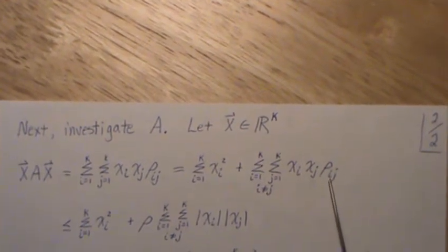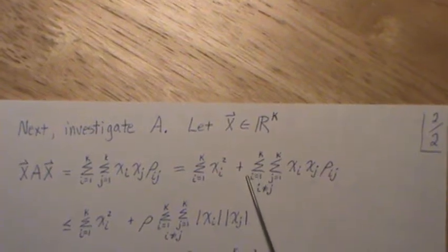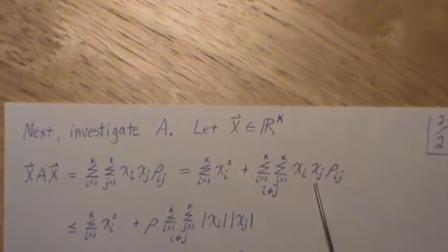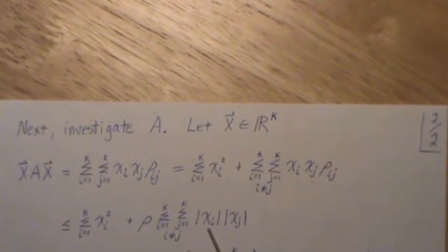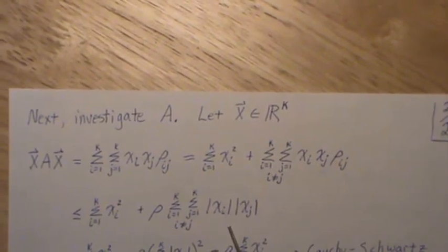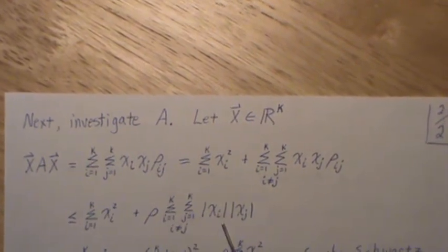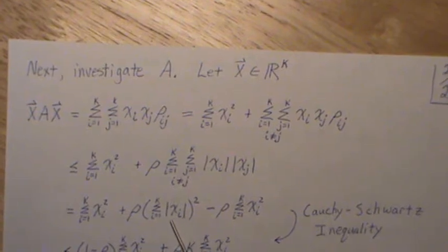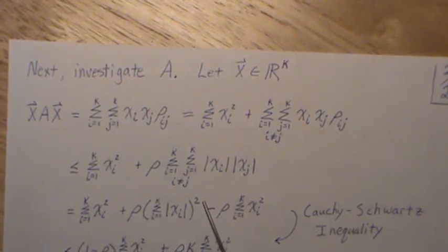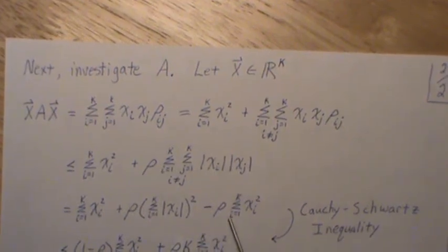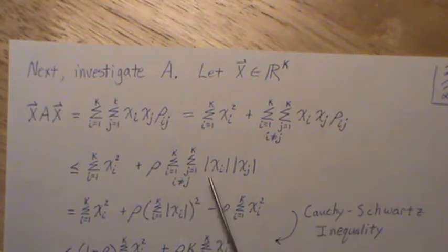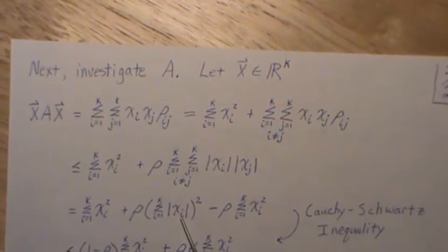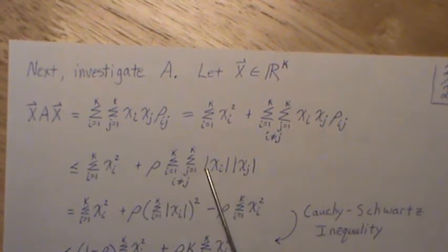If we take the largest absolute value of ρ and bring it out front, and take the absolute value of x_i and x_j, this gets a little bit larger. Now the sum of absolute value of x_i squared equals the square of the sum of absolute values of x_i, which we can rewrite by adding and subtracting terms. This gives us the sum of absolute x_i squared plus ρ times the quantity [sum of absolute x_i]^2 minus the sum of x_i squared.